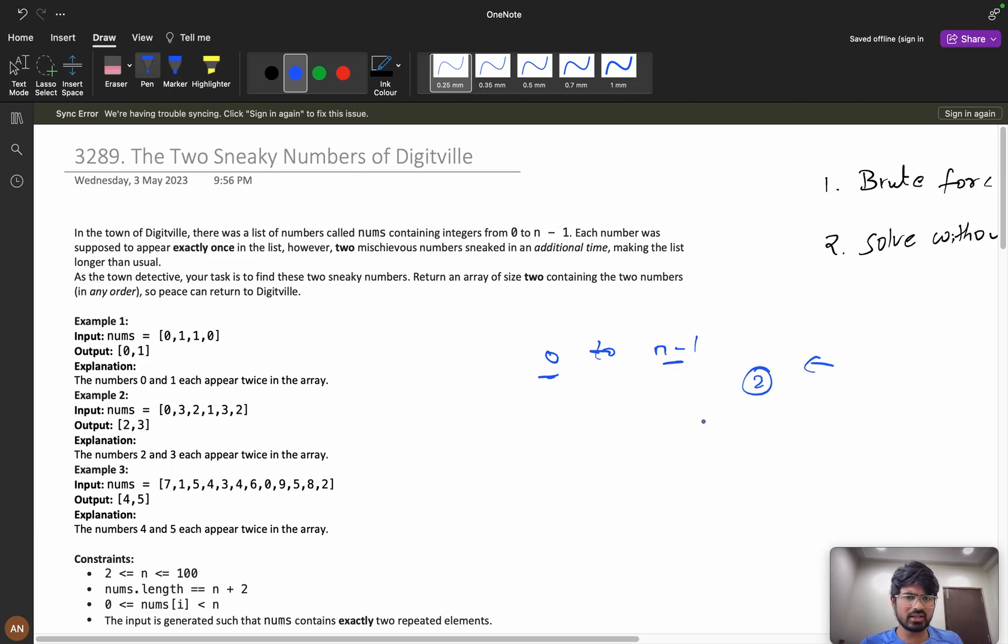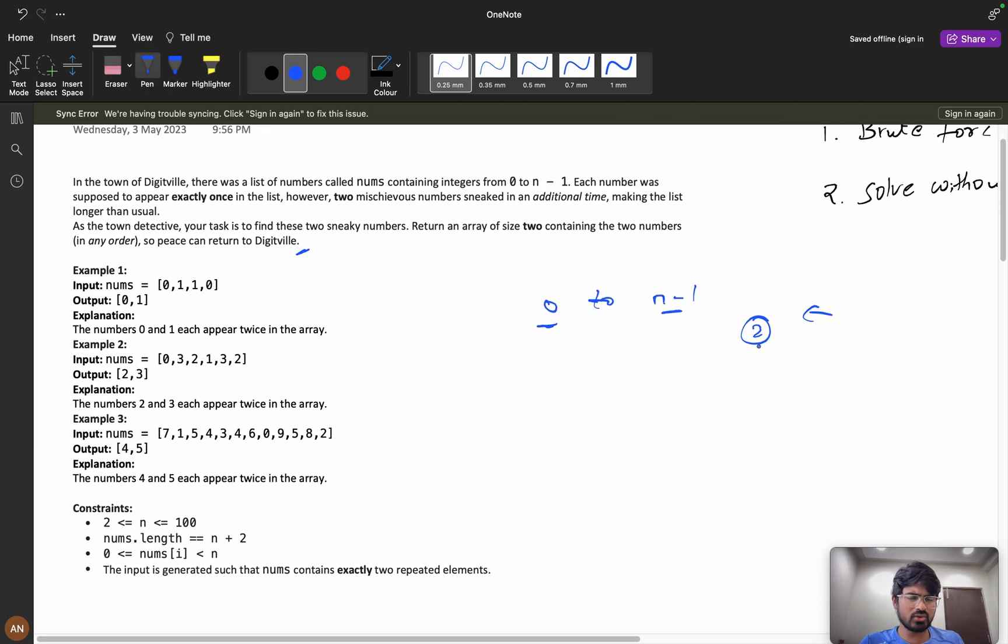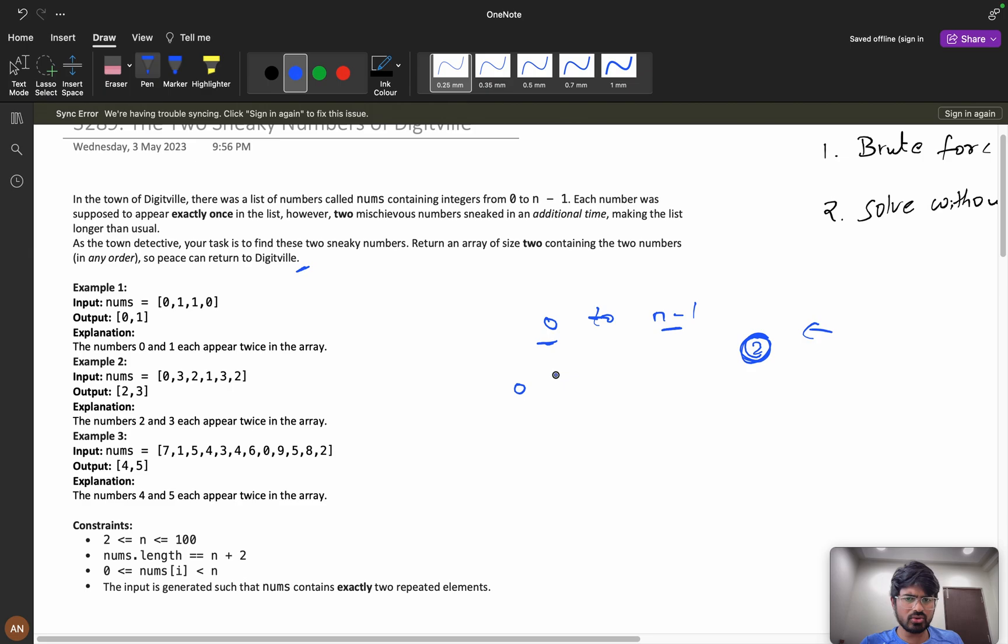Every number 0 to n minus 1 should appear once, but two mischievous numbers have entered into the list, increasing its size. As the town detective, your task is to find these two sneaky numbers and return an array of size 2 containing those two numbers. So he is saying that 0 to n minus 1, all elements will occur once except two numbers.